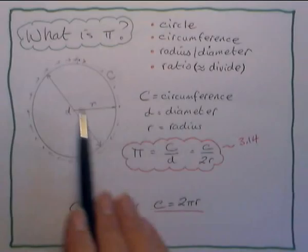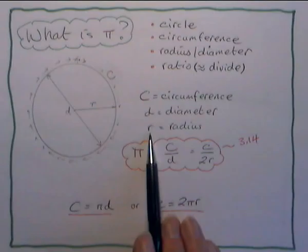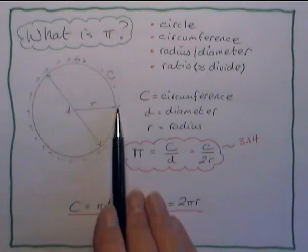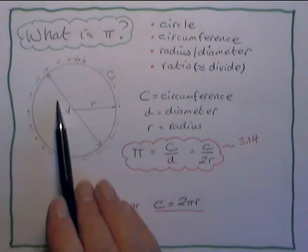D, the diameter of a circle, is the distance from one side to the other, passing through the centre. And R, the radius, is the distance from the centre of the circle to the outside.